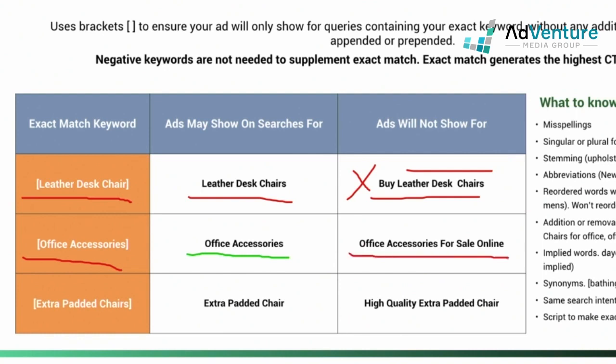Even though the phrase 'office accessories' is there in the right order, 'for sale online' are additional words in the query that do not appear in my keyword, so they won't trigger that exact match keyword. Another example: 'extra pad of chairs' — 'extra pad of chair' without the S can show, as plurals and slight misspellings can trigger it. But 'high quality extra pad of chair' is a search term that will not show.